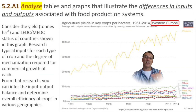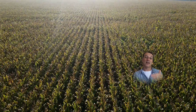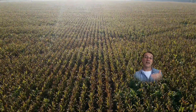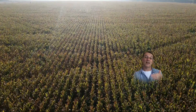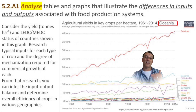Crop yields vary greatly around the world and have changed over time. In the United States, for example, corn yields have increased dramatically since the 1960s thanks to advances in technology and farming practices. However, yields in many developing countries remain much lower. This kind of data helps us understand global food security challenges and imbalances, and shows us the potential for improving production in different regions.